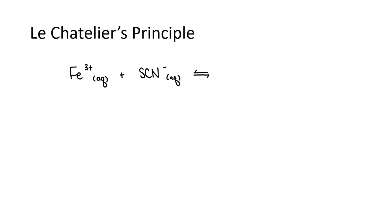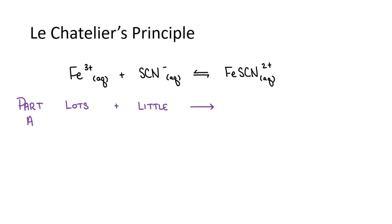We are going to call this Part A of the experiment. In Part A, we will use reference solutions to create a standard so we know which levels of absorption correspond with which concentrations. We will start by adding a lot of the iron 3-ion with just a little bit of the thiocyanate ion. According to Le Chatelier's principle, the huge excess of iron ions should convert all of the thiocyanate ions into the FeSCN²⁺ complex ions.